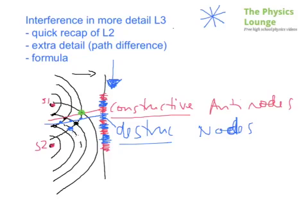So the path difference - at that point it's an antinode. You've got 1 wavelength, 2 wavelengths, 3 wavelengths. So 3 wavelengths from source 1. From source 2, you've got 1 wavelength, 2, 3, and then 4 wavelengths. So you've got 3 wavelengths and 4 wavelengths.